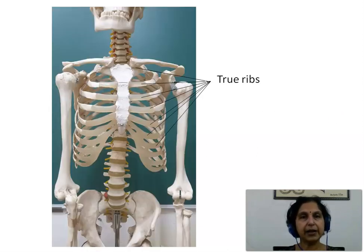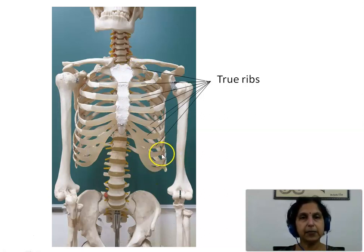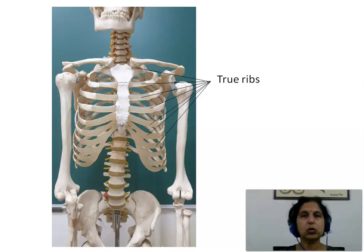What we see here is the anterior view of the bony skeleton. This is the lateral margin of the sternum, and we see here the 1st, 2nd, 3rd, 4th, 5th, 6th, and 7th ribs, each connected by their respective costal cartilage to the lateral border of the sternum — thus the 1st to 7th ribs are true ribs. The 8th, 9th, and 10th ribs are attached by their respective costal cartilages to the costal cartilage of the rib above, and thus do not reach the lateral border of the sternum — hence they are called false ribs. Similarly, the 11th and 12th ribs do not reach the anterior part of the thoracic cage and are not connected to the sternum, so they also constitute the false ribs.